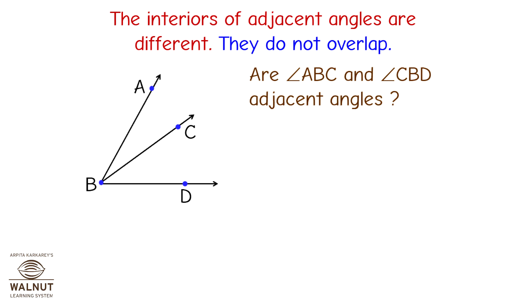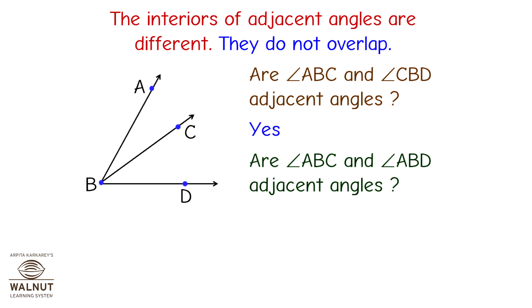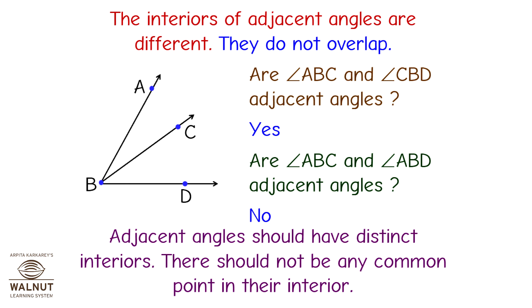Are angle ABC and angle CBD adjacent angles? Yes. Are angle ABC and angle ABD adjacent angles? No — adjacent angles should have distinct interiors, and there should not be any common point in their interior.